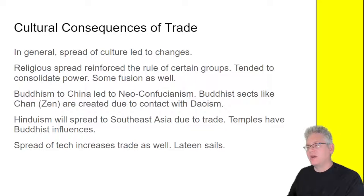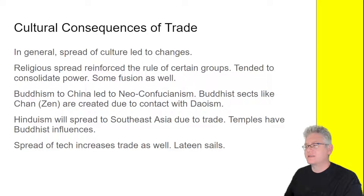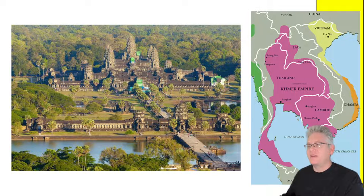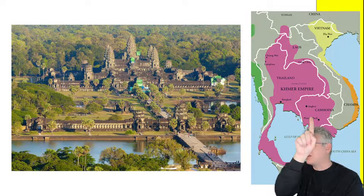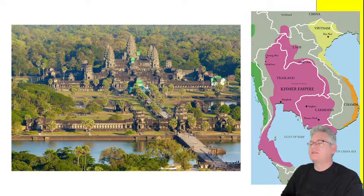Buddhism's contact with Taoism in China led to Neo-Confucianism. Buddhist sects like Zen emerged from that contact. Hinduism spread into Southeast Asia due to trade. On the left is Angkor Wat — a temple in the city of Angkor in modern-day Cambodia — belonging to the Khmer Empire, a major land-based empire in Southeast Asia. The Khmer were the land-based counterpart to maritime empires like Srivijaya and Majapahit.